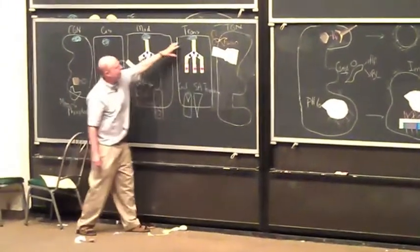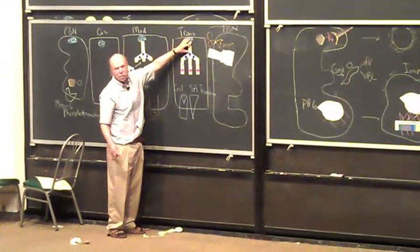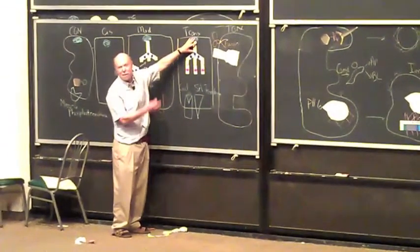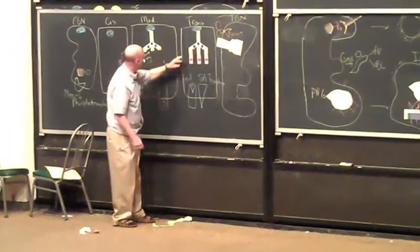Then the protein with its oligosaccharide side chain would make it here. Of course, if it doesn't have an N-link sugar, it's not going to get processed by these enzymes. It would just move from cis to trans. It gets to the trans-Golgi network.